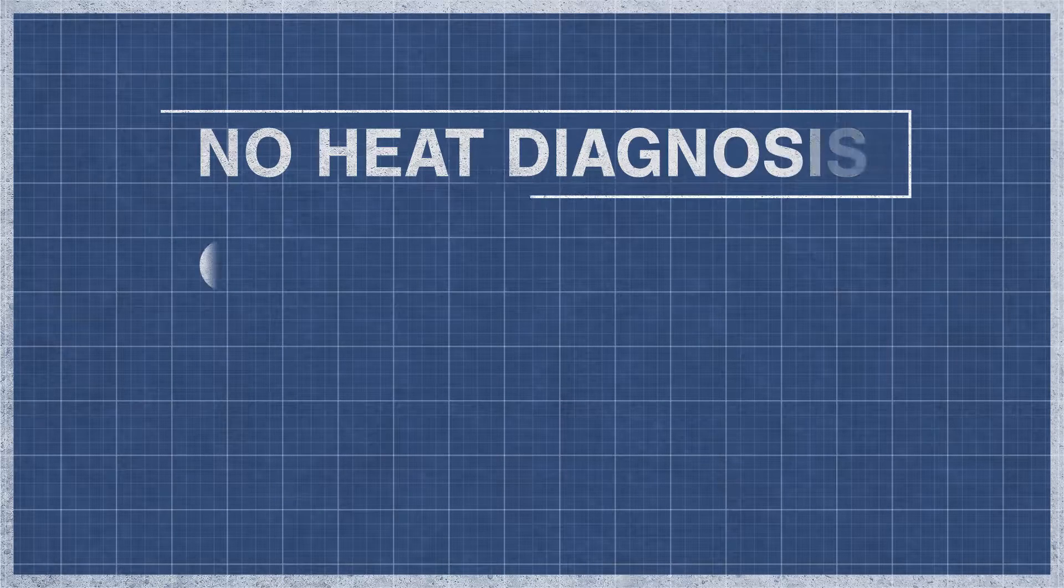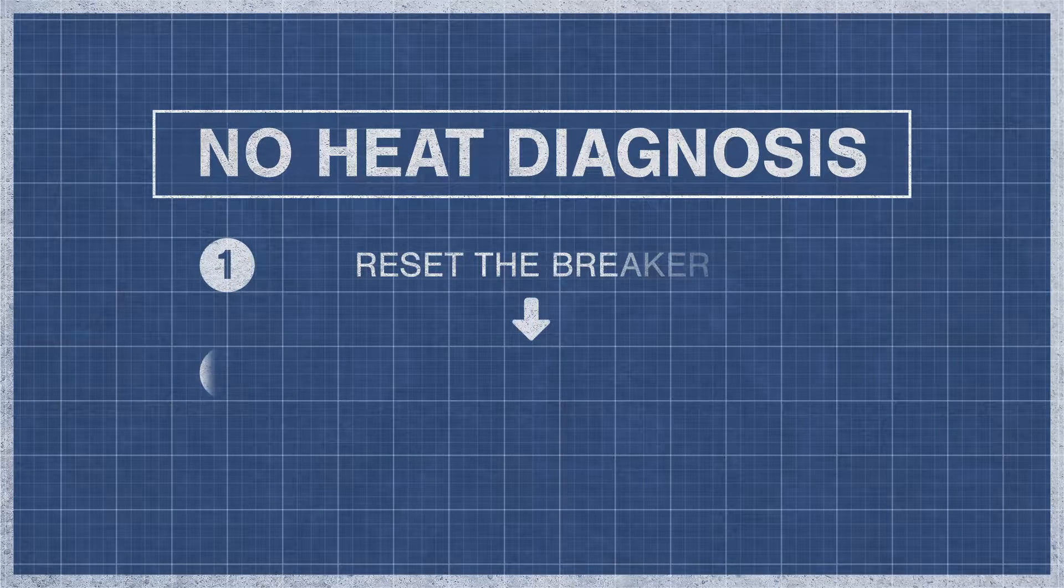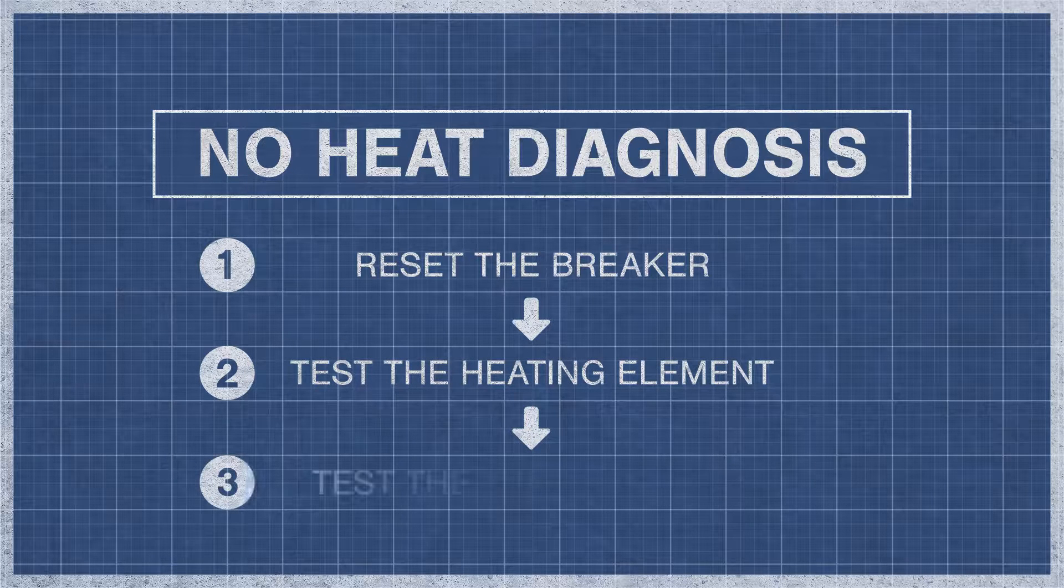When a dryer fails to produce heat, it is best to eliminate the potential problems step by step. For an in-depth guide, watch the videos below.